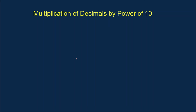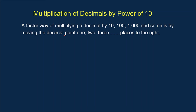Now let's proceed to multiplication of decimals by the power of 10. There is a faster way of multiplying decimals by 10, 100, 1,000, and so on. All we have to do is move the decimal point one, two, or three places to the right.